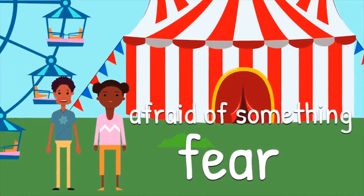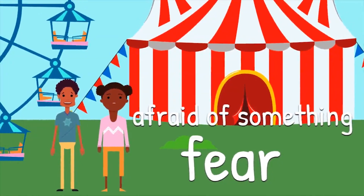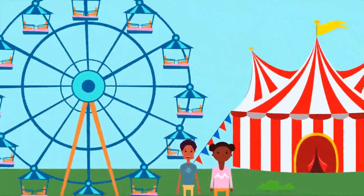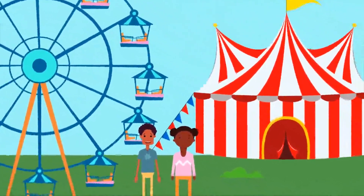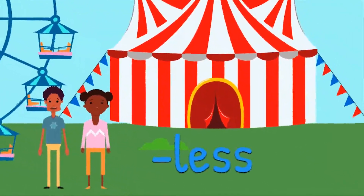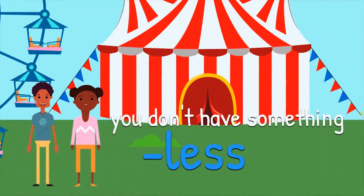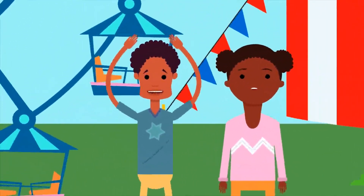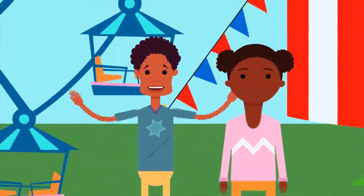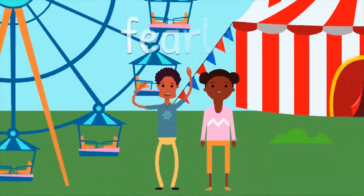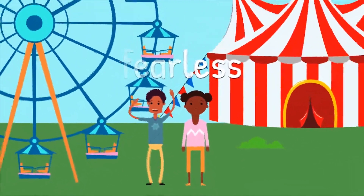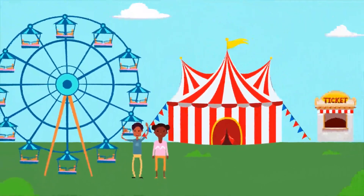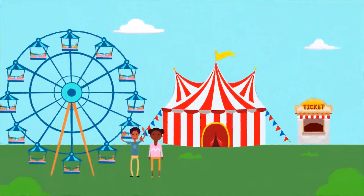My brother was not scared at all — he was fearless. The word fear means to be afraid of something. I had fear about riding the ferris wheel. When you add the suffix -less to a word, it means that you don't have something. My brother did not have fear — he was fearless. Let's head back to the classroom to talk about the three suffixes we learned today.